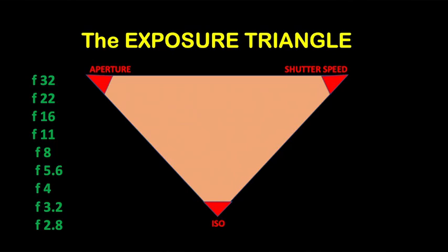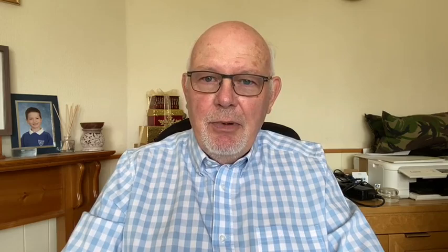Each element — aperture, shutter, ISO — is all about manipulating light. The aperture is the size of the lens opening; it controls the amount of light that enters the lens. The larger the opening, the more light comes into the sensor; the smaller the opening, the less light. The shutter speed controls how long the shutter is going to be open — it controls the duration of light that's allowed to hit your camera sensor. The longer the shutter speed, the more light will enter; the shorter, the less light.